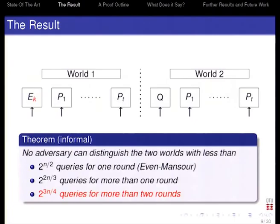The result we are able to prove is: if there's only one round — only one P1 — then an adversary needs roughly 2^(n/2) queries to be able to tell apart the two worlds. If there's more than one round, he needs 2^(2n/3) queries to have a good success probability. And a further result, not in the proceedings version but in an upcoming full version, is that if you have more than two rounds, then it's 2^(3n/4). This already gives a pattern for what you could hope in general — how this should increase with the number of rounds — but so far we don't have a bound that increases with the number of rounds.